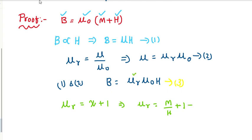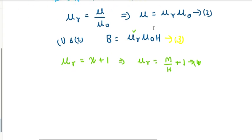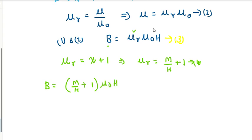Now substituting equation four into equation three — replacing mu r with M over H plus 1 — the magnetic induction B equals mu naught into (M over H plus 1) into H. This gives B equals mu naught into (M plus H).